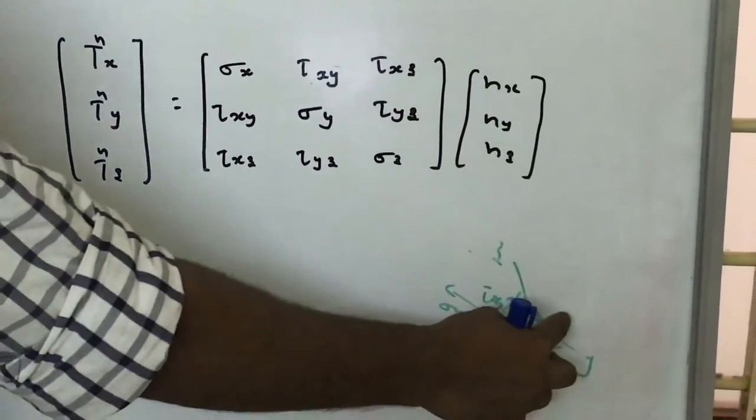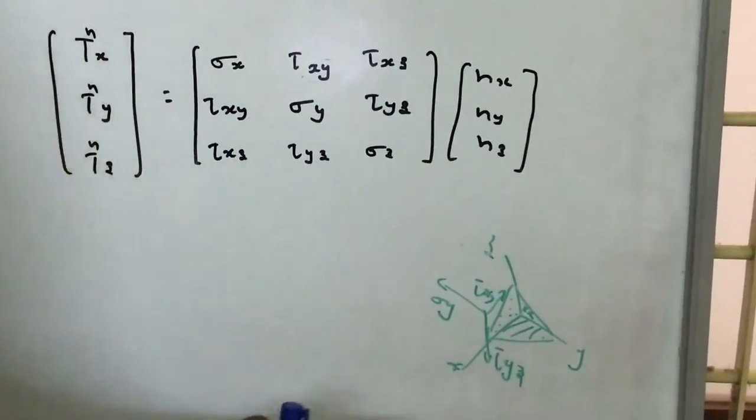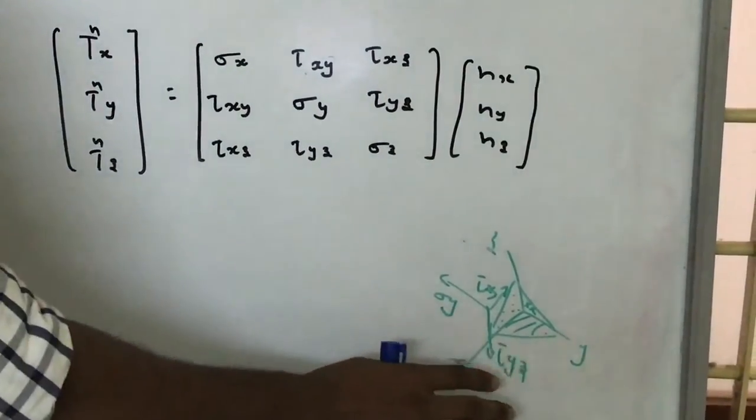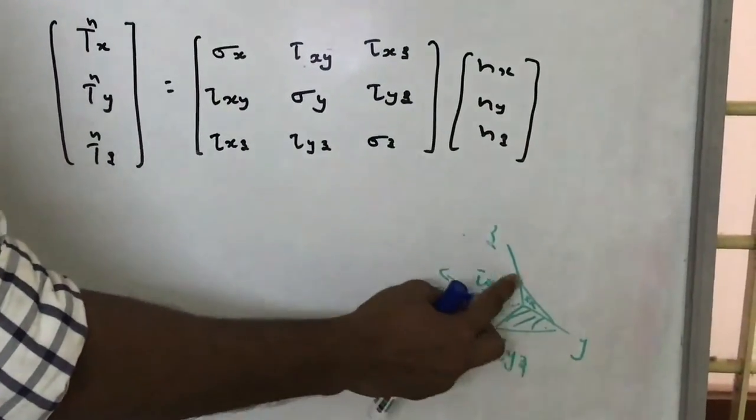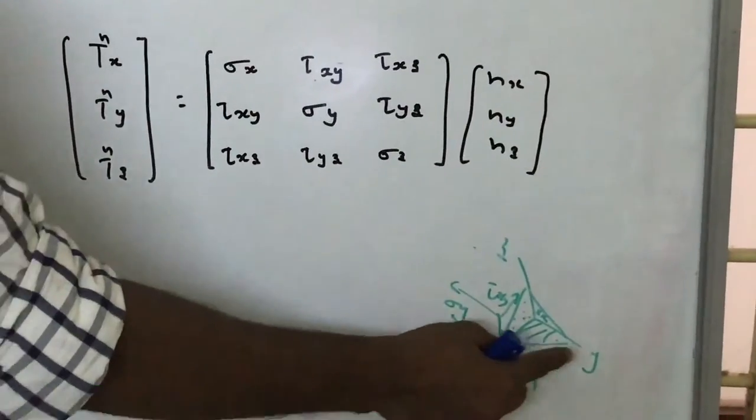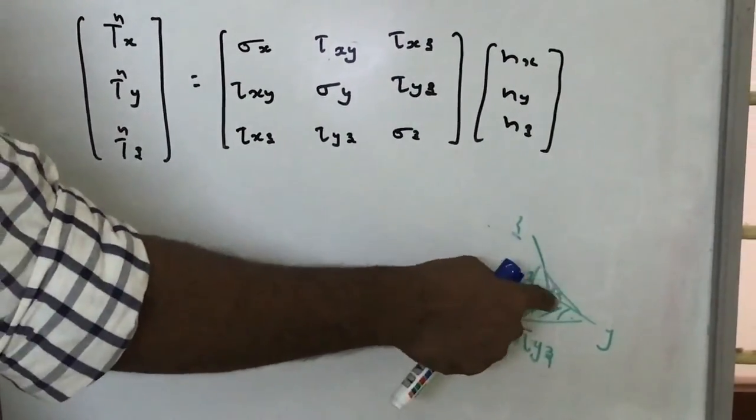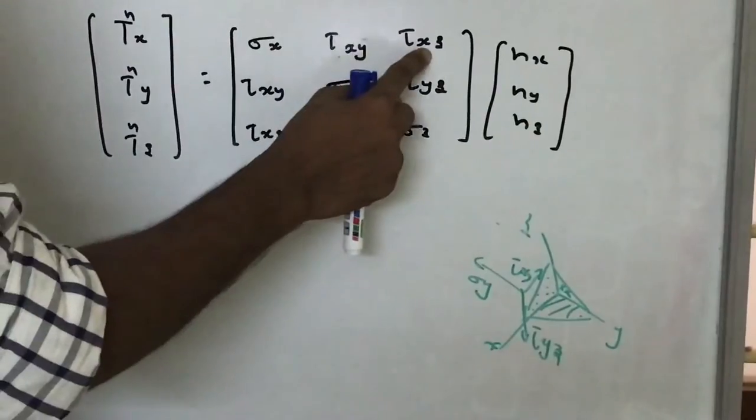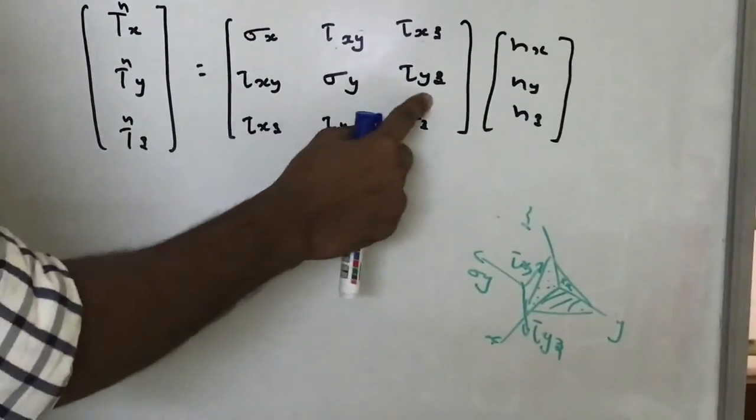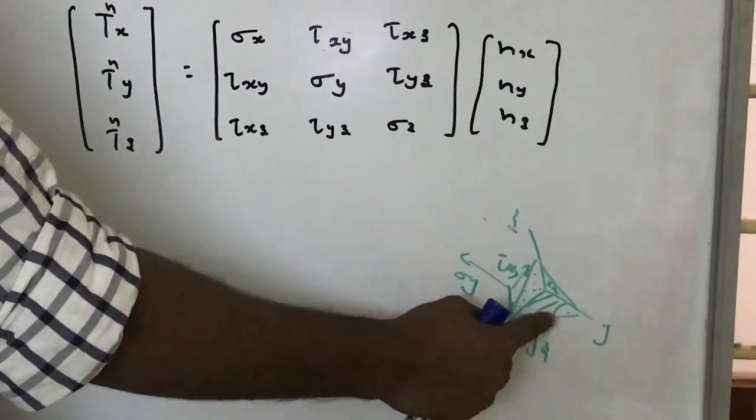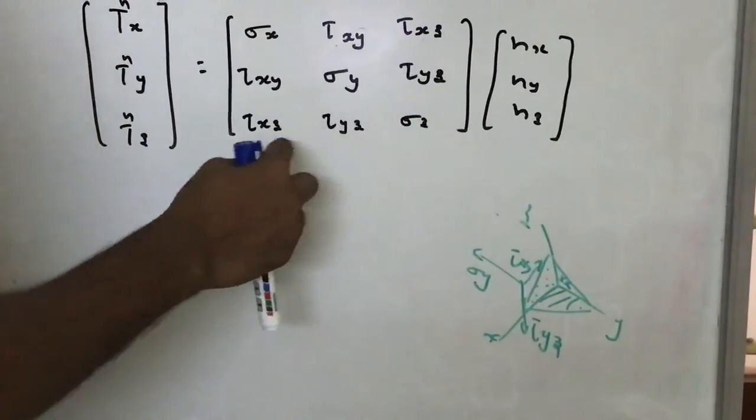Similarly, in all these three planes there will be different stresses. In the x plane, which is the yz plane—we are calling this yz plane as x plane because the normal of yz plane is x axis—there is sigma x, tau xy, tau xz. In y plane, there is sigma y, tau xy, tau yz. And in z plane, there is sigma z, tau xz, tau yz.